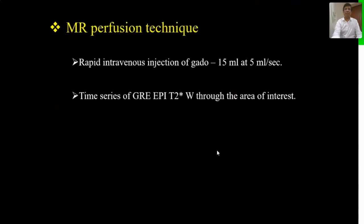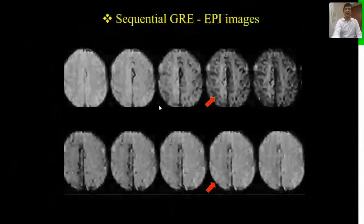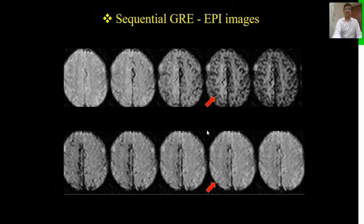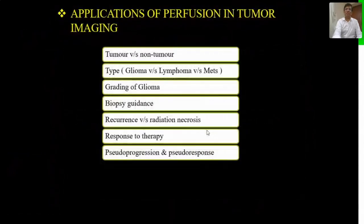How does MR perfusion perform? We inject rapid intravenous gadolinium — approximately 15 ml at a rate of 5 ml per second — then obtain a time series of GRE-EPI based T2-star images covering the entire brain. This sequential set of T2-star images captures the area of tumor picking up contrast early and washing out early. You get a set of about 32 images which are then post-processed to look at the perfusion of the given region of interest.